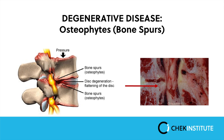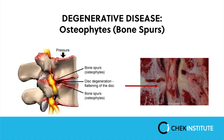Arthritis can cause bone spurs at the edges of the facet joints. These bone spurs may form in the opening where the nerve root leaves the spinal canal — called the neural foramina. If the bone spurs rub against the nerve root, the nerve may become inflamed and irritated, causing symptoms wherever that nerve travels, including numbness, tingling, slowed reflexes, or even weakened muscles.